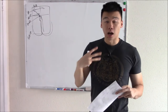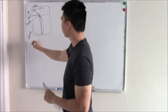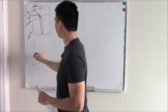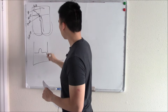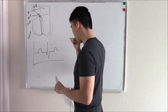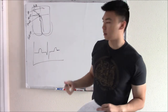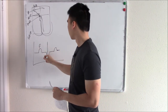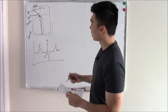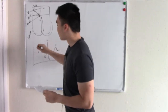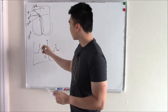We can measure the health of this conductance system with an ECG — electrocardiogram. Your ECG looks like this, and we label all the major events alphabetically: P, Q, R, S, T. Initially your atria contract, and that's measured in the P wave.